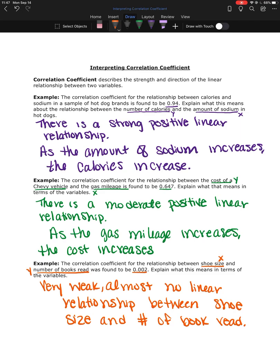Okay, I'm just going to say it's a very weak, almost no linear relationship because that correlation coefficient is so close to zero. If it was a little bit closer to that 0.3, I might write a statement like that saying that as the shoe size increases, the number of books read increase, but I'd still be wary because it's in that weak range.